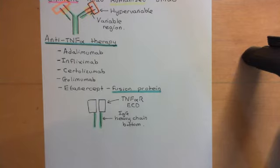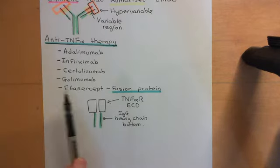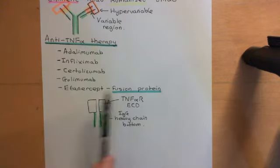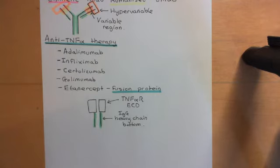Due to unforeseen circumstances, I had to cut off the ending to the previous video, which is why some new stuff has just appeared here. So at the end of the previous video, we had discussed a bunch of monoclonal antibodies used to treat rheumatoid arthritis, and the way that these monoclonal antibodies work is they bind to tumor necrosis factor alpha and neutralize those TNF-alpha molecules.